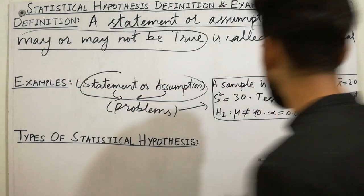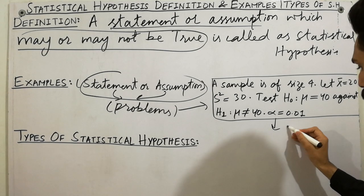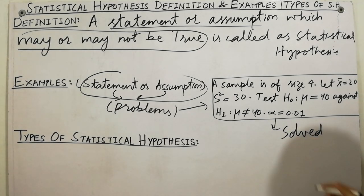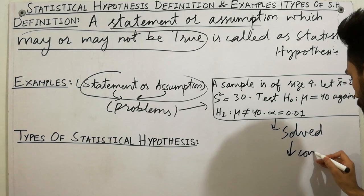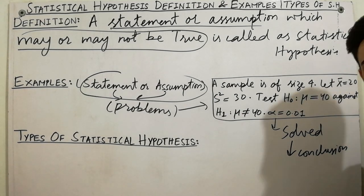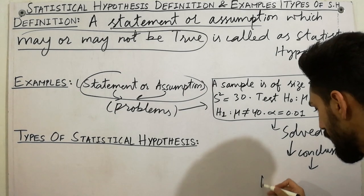Which may or may not be true shows that, let's suppose I solve the problem. After solving this problem, we have a conclusion.